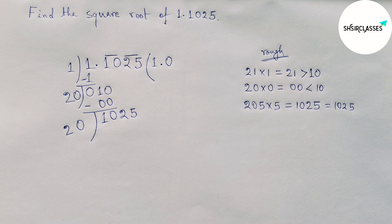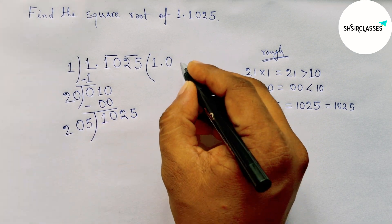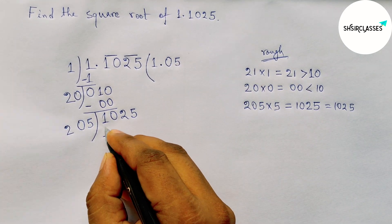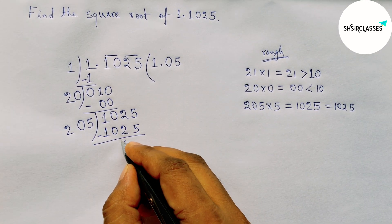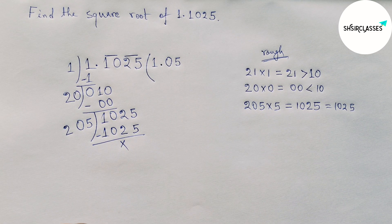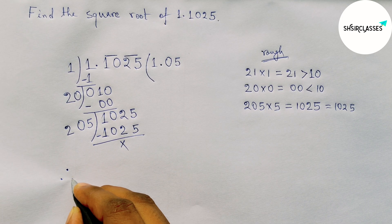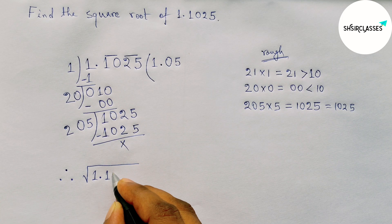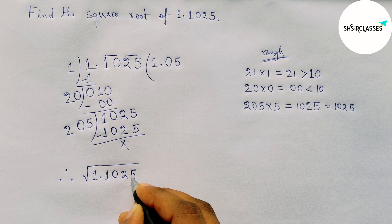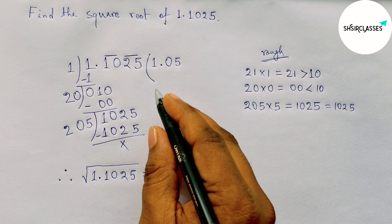So five times five is 25, carry to 25, and five times two is 10. So this equals 1025. So putting here five and here also five. So 1025, so that's complete. Therefore, the square root of 1.1025 equals 1.05.